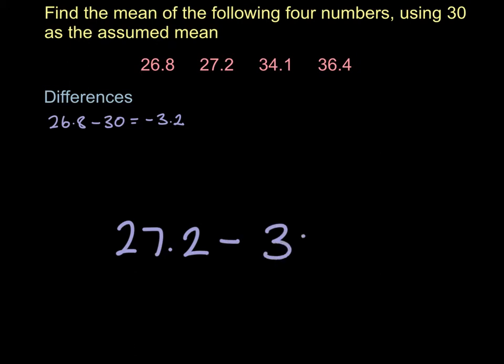We'll take the second number, 27.2, and take away our assumed mean. That's going to give us an answer of negative 2.8.